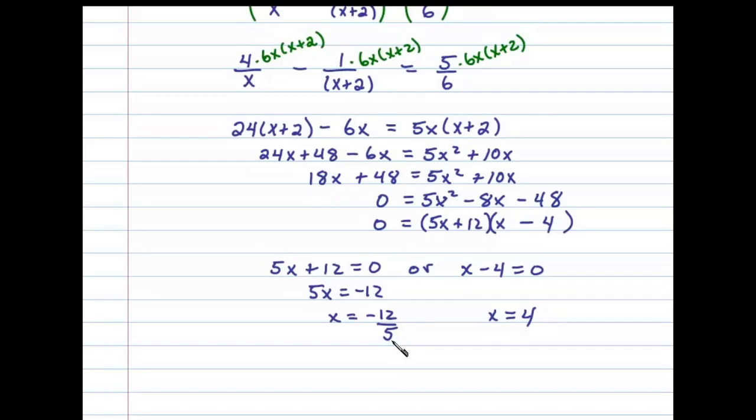We're looking for consecutive even integers, and -12/5 is not an integer, so we'll choose x = 4 to be our only solution. So x + 2 will be 6, and the two consecutive even integers are 4 and 6.